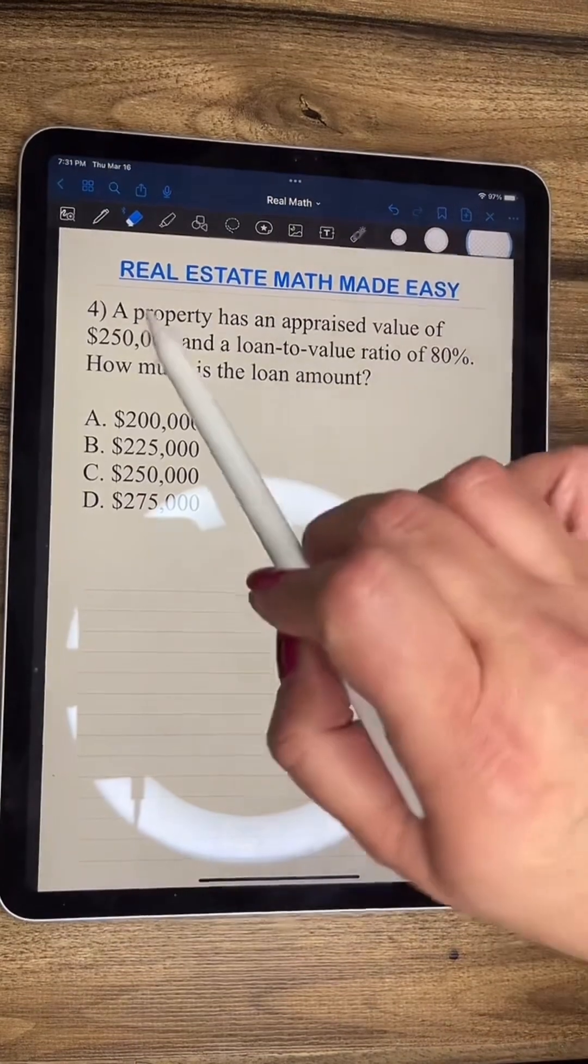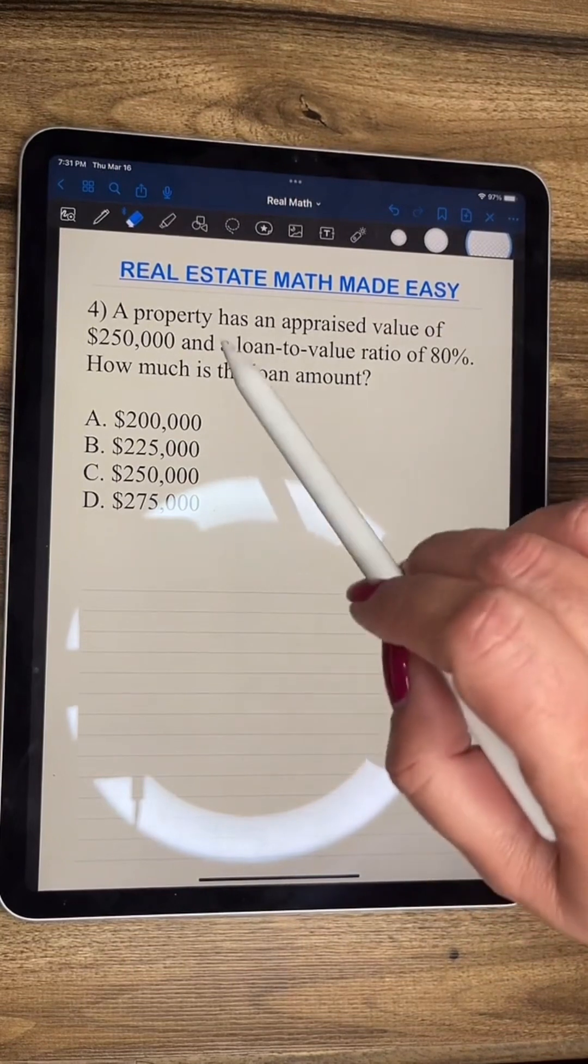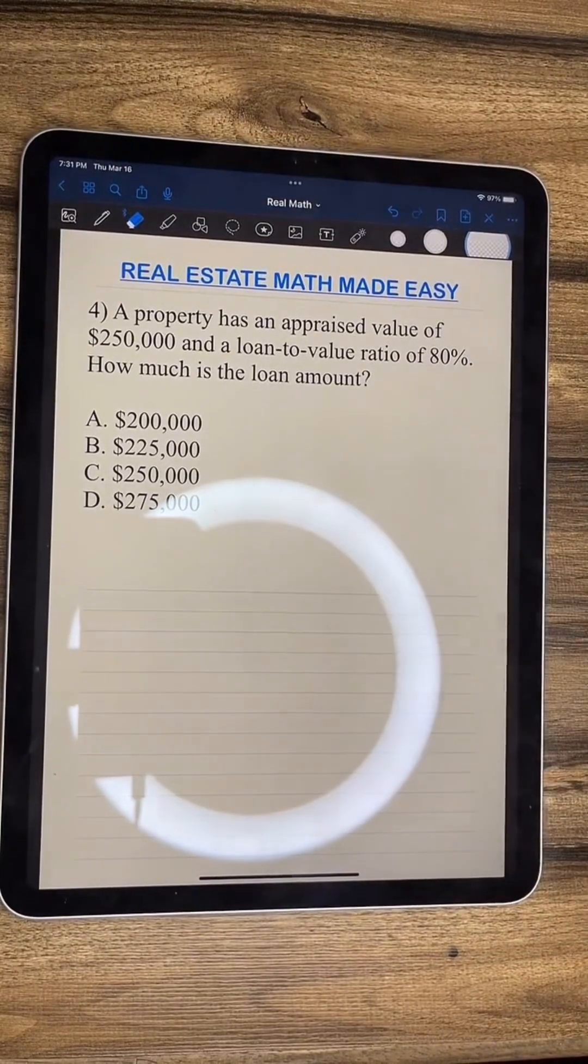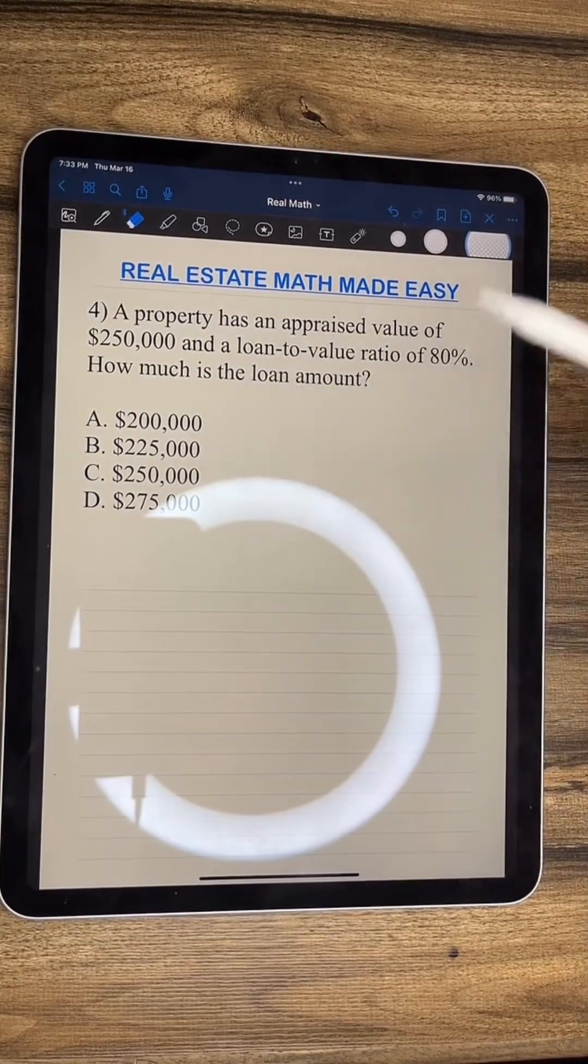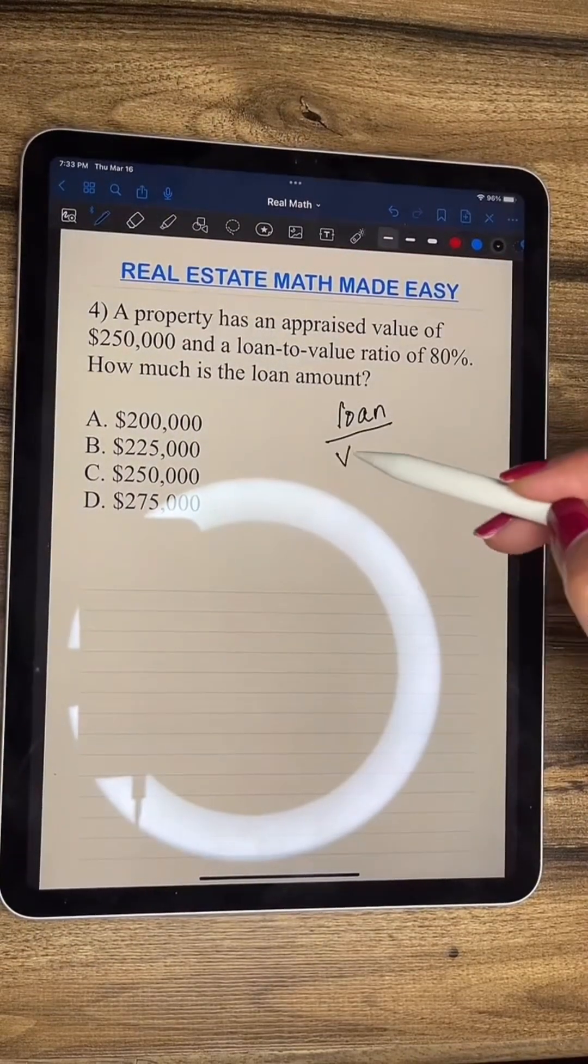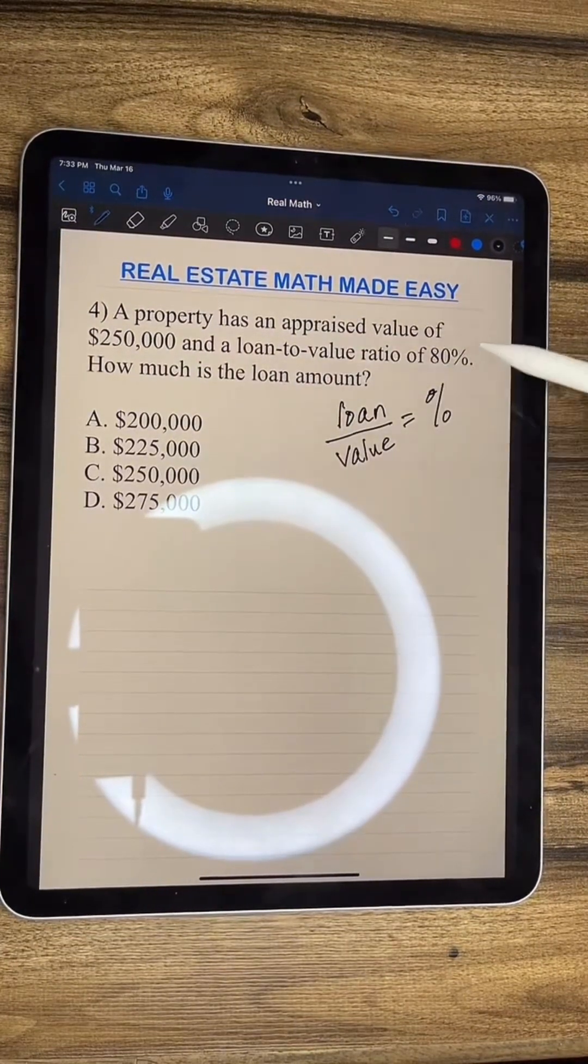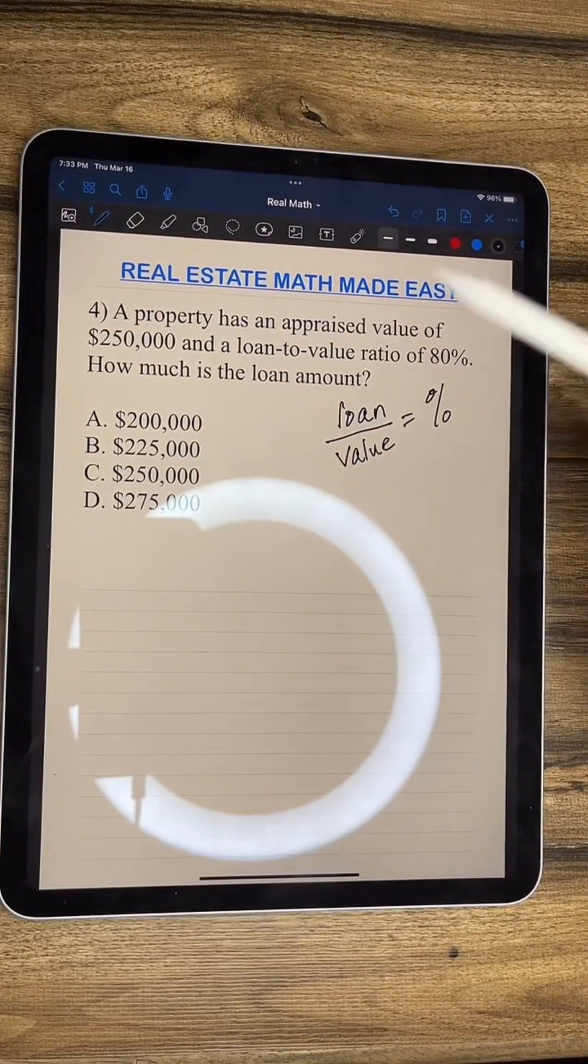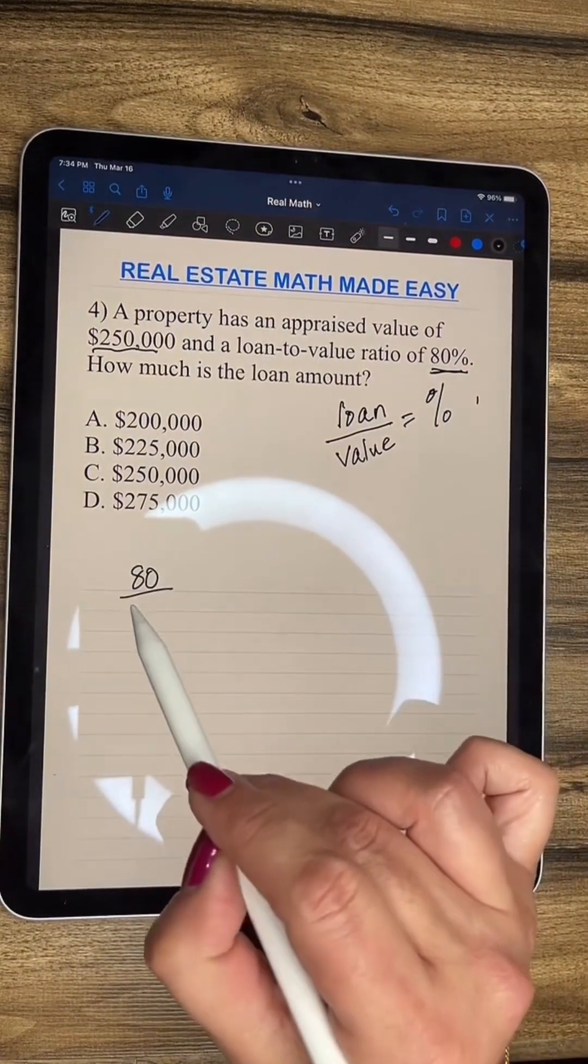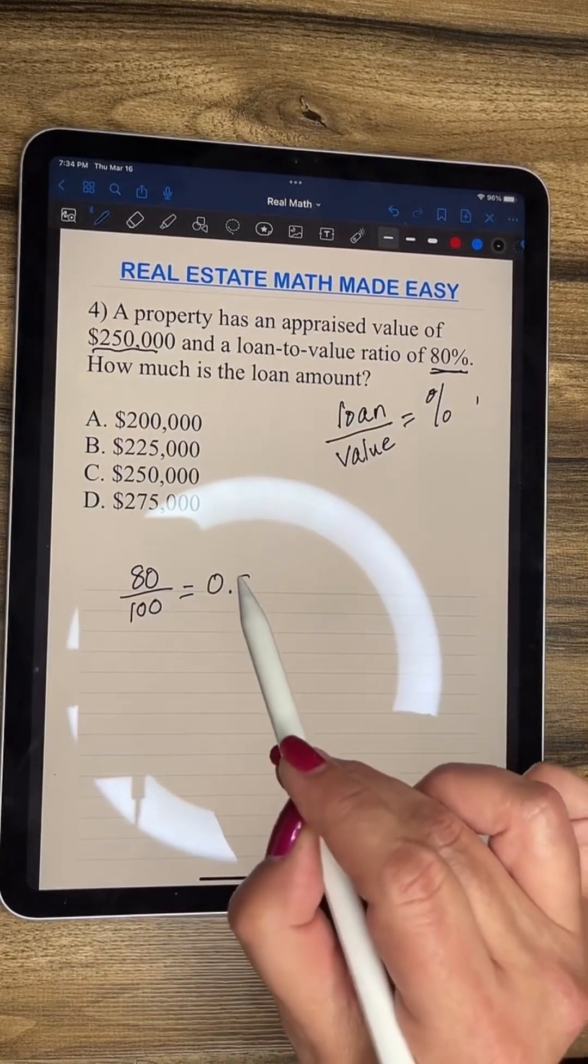And it says here, a property has an appraised value of $250,000 and a loan-to-value ratio of 80%. How much is the loan amount? Remember, that is a fraction. Loan-to-value equals your percent of 80%. How much is the loan amount? We have to change this 80% to a decimal. So this is going to equal 0.8.